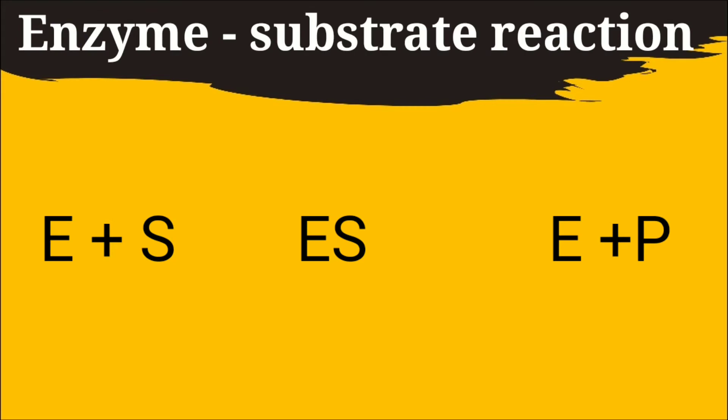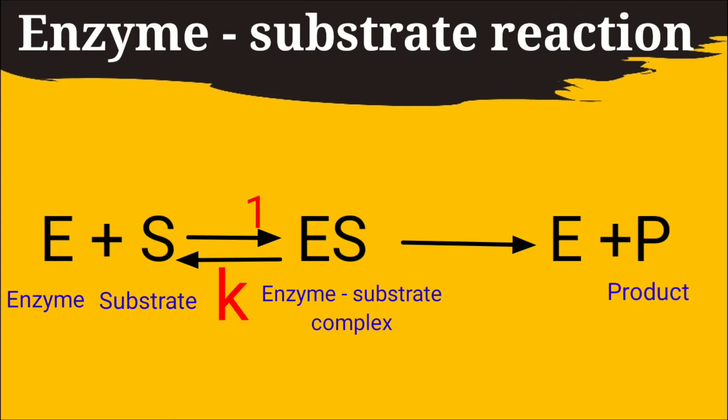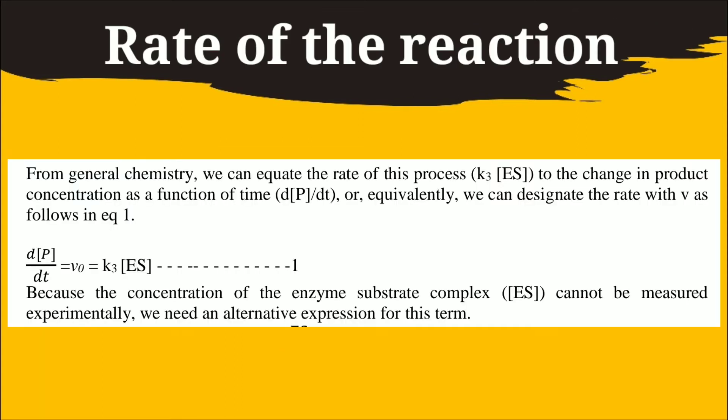Suppose an enzyme E reacts with single substrate S and convert it into single product P. Then we can write the reaction in this way. Here enzyme substrate complex ES is stable for a very short duration. Then how we can measure the rate of the reaction.